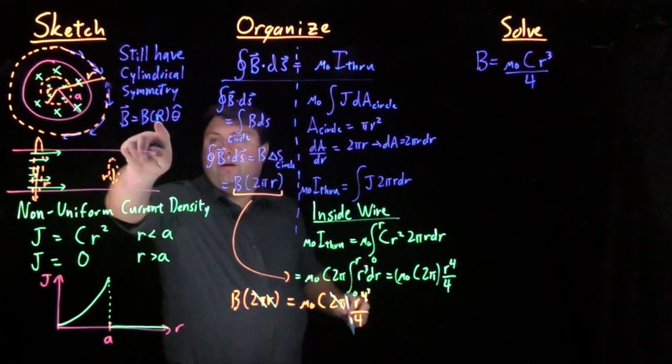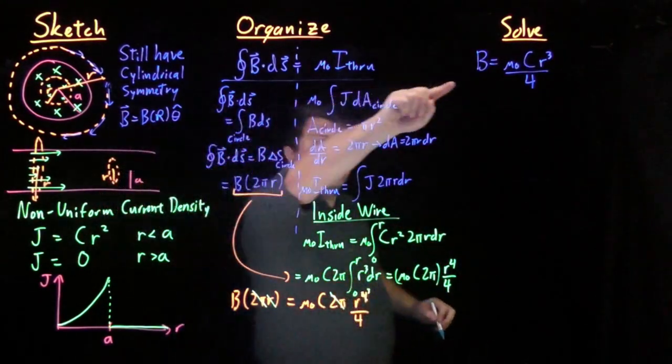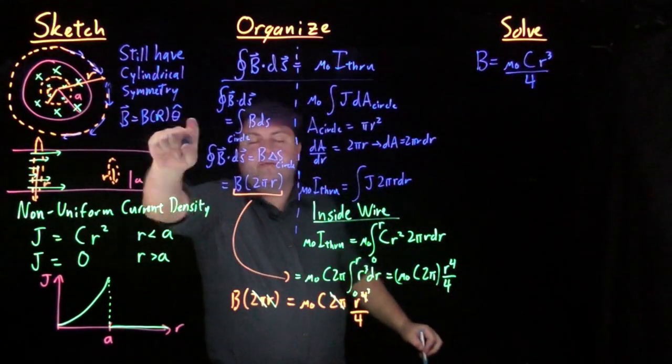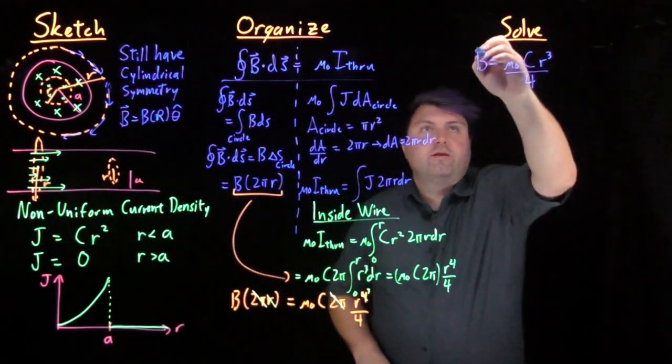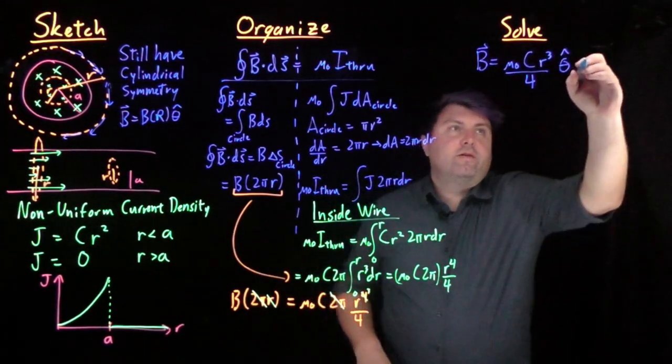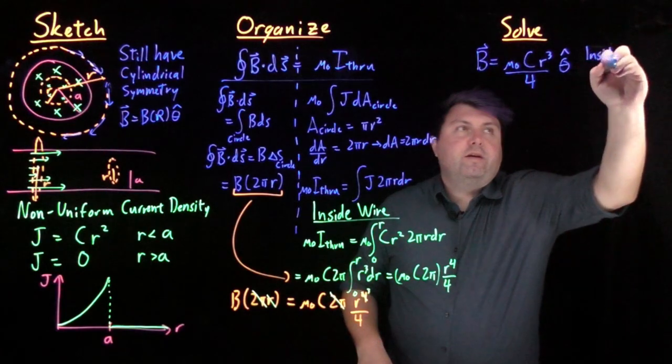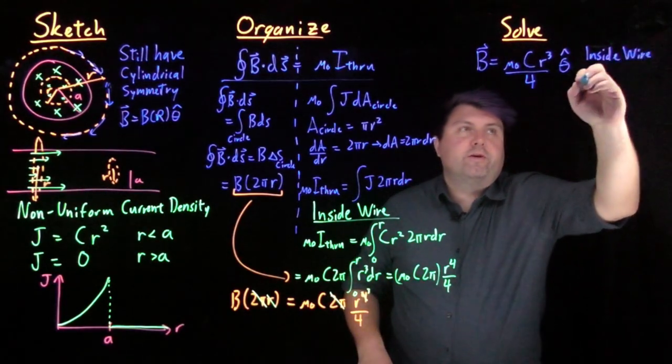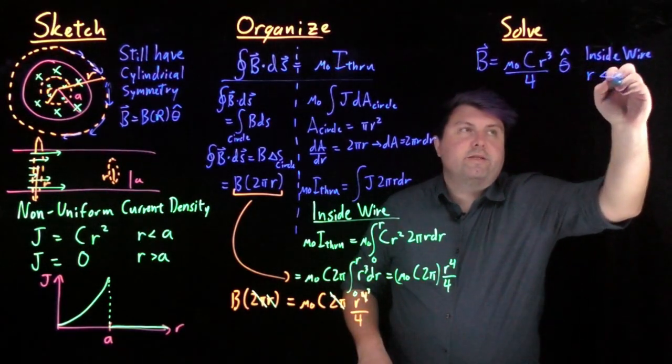And we know that our magnetic field has to be a function of r. It is a function of r, and it has to be in the theta hat direction. So we can give it direction like that. And this is inside the wire, or we are saying r less than a.